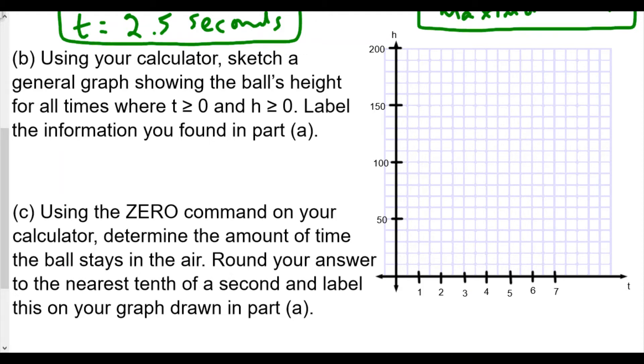It says here we want to label the information found in part a. The information found in part a is really going to be that when t equals zero we're starting at 30. At 2.5 seconds we're at 130 feet as a maximum height. So this is going to be 2.5 comma 130, and this of course is 0 comma 30. It's going to look kind of like this here, coming back, coming down at somewhere over here because it's a parabola.